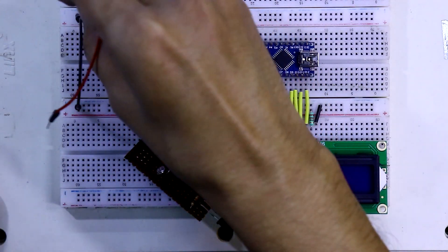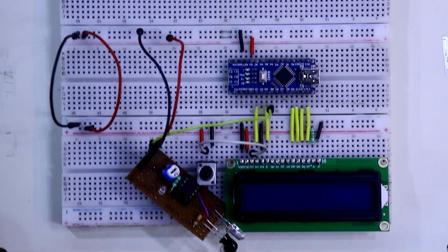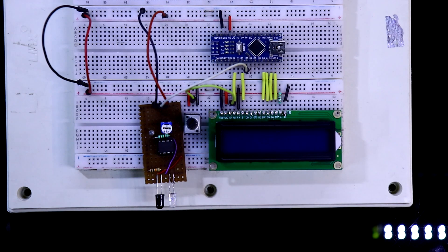Now connect both the negative and positive rail. Connection is completed. Now we have to upload the code. After uploading the code, I am connecting 5V power supply.